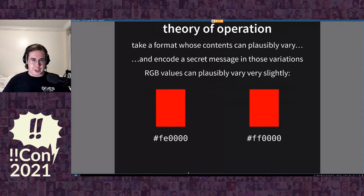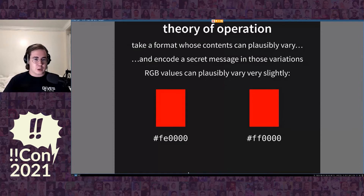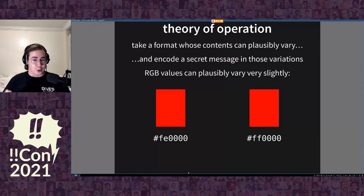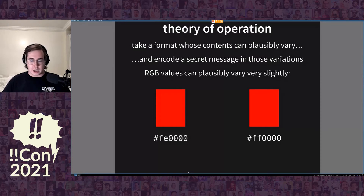The theory of operation behind almost all steganographic techniques is you take some input format whose contents can plausibly vary very slightly, and encode secret messages within those variations. A good example of this is the RGB 24-bit color space. These two colors are nearly identical — they're one bit off — and human beings can't tell the difference, but computers certainly can. So if we take an input file encoded using the 24-bit RGB color space and tweak these values very slightly, we can use those tweaked bits to hide a message that only other people in the know can decode.